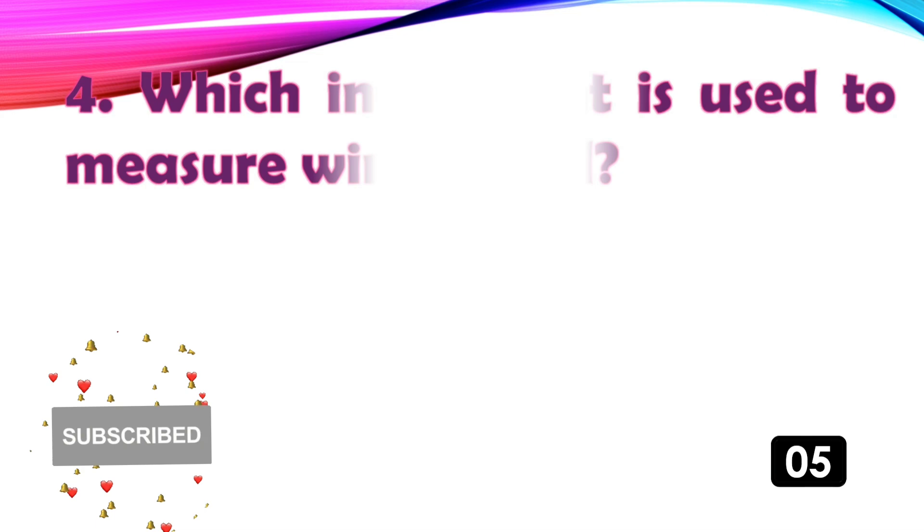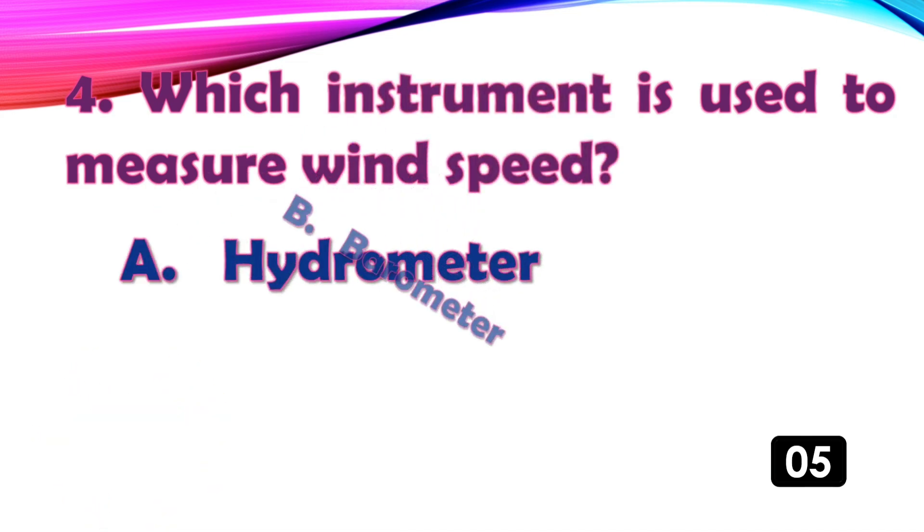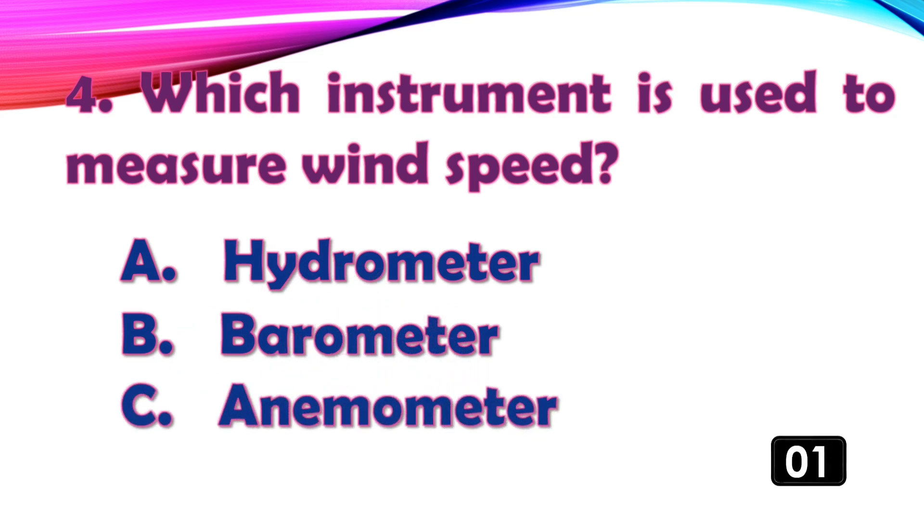Which instrument is used to measure wind speed? The right answer is option C, anemometer.